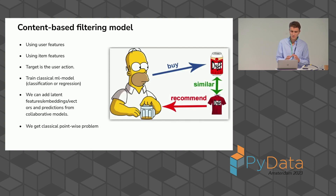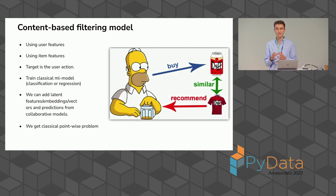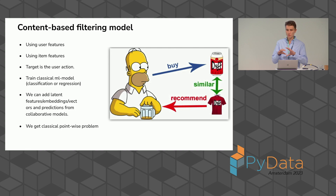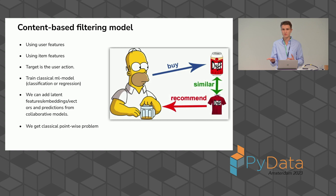The second approach is the content-based filtering model, which is similar to a classical classification problem. We combine user features and item features, and try to predict a target — like zero or one — where one means positive feedback from the user and zero is negative or no feedback.